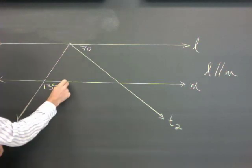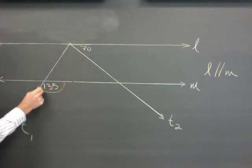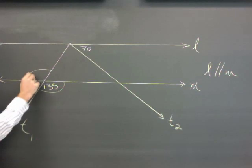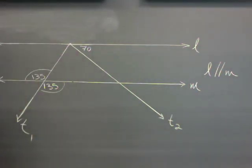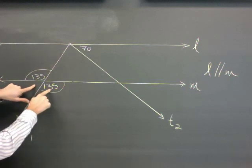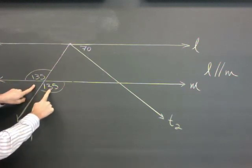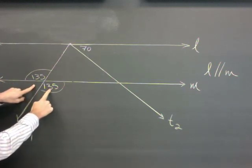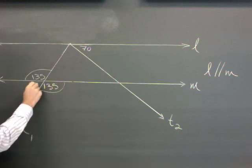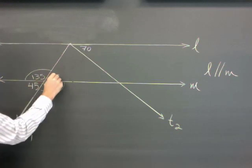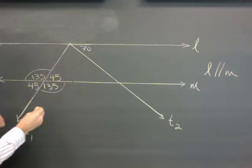So the first thing I'm going to do is this is easy. This 135 is vertical to this angle. Easy. Next, these two make a straight line right here, right? Straight line is supplementary. Adds up to 180. So 180 minus 135. Right, 45. Look, more vertical angles. This must be 45, okay? What can I do now?